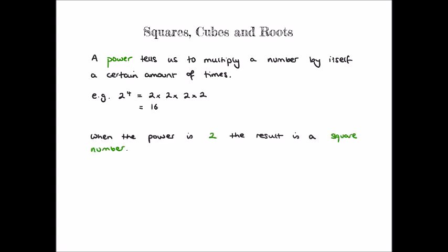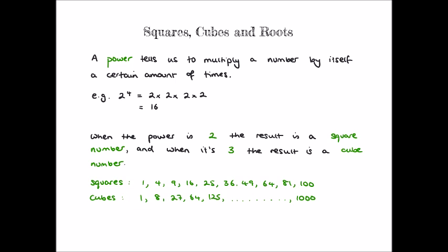When the power, which we sometimes call an index or exponent, is 2, the number we get is called a square number. And when the power is 3, the result we get is a cube number. Now, it's important not only that you can calculate these, but you do need to be able to recognize and quickly recall the square numbers up to the result of 10 squared, and the cube numbers up to the result of 5 cubed, plus the result of 10 cubed. Why don't you pause the video now and see how many of these square and cube numbers you can list? Give yourself a minute or two to do this. Did you get them all?